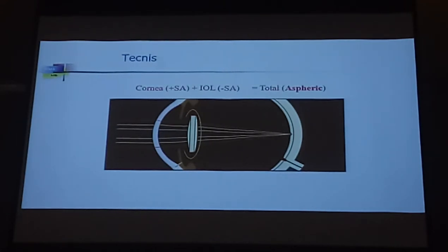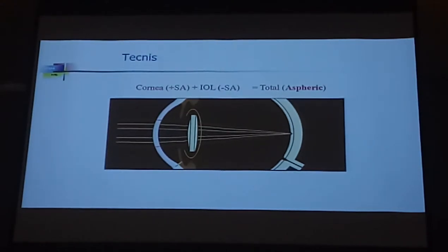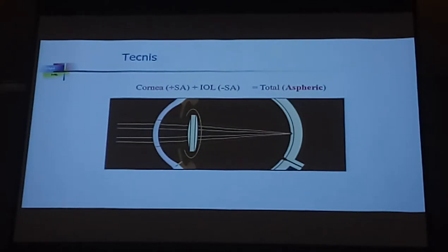But it is not without problems. The IOL has to be well centered and it cannot be too tilted. If the tilt is more than 7 degrees or the decentration is more than 0.4 mm — depending on how much negative spherical aberration the IOL has — you'll start to have worse outcomes than putting in a positive spherical aberration IOL.